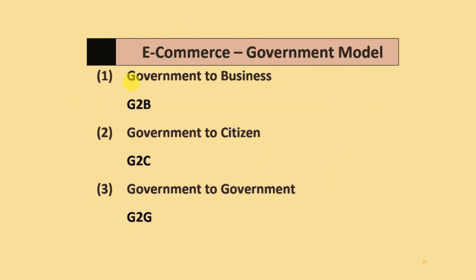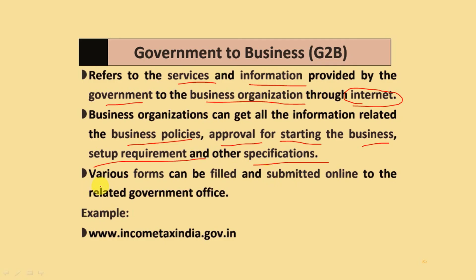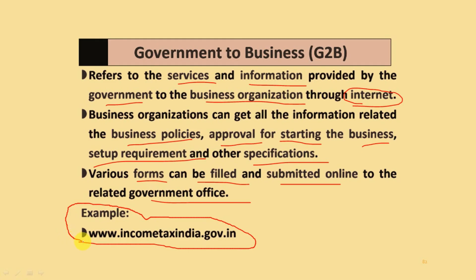E-commerce government models include Government to Business (G2B), Government to Citizen (G2C), and Government to Government (G2G). Government to Business (G2B) refers to services and information provided by the government to business organizations using the internet. Businesses can get information related to business policies, approvals for starting a business, setup requirements, and specifications. Various forms can be filled and submitted online to government offices. An example website is IncomeTaxIndia.gov.in.